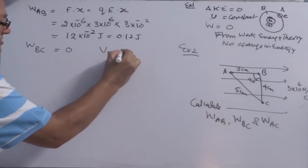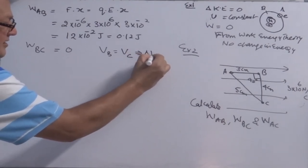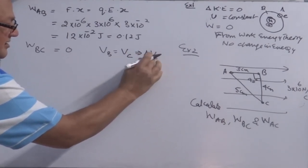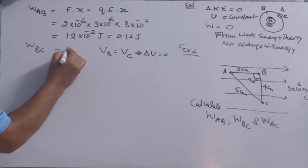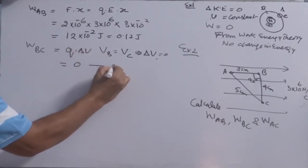So these both points are lying on equipotential surface. So potential of B is equal to potential of C, that means delta V, C is 0, delta V is 0. So it will be Q into delta V, it is 0. No work done in the second situation.